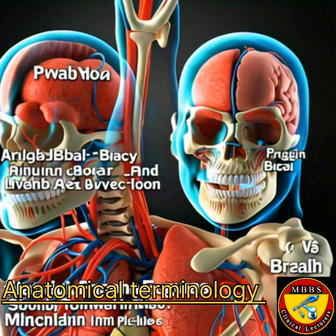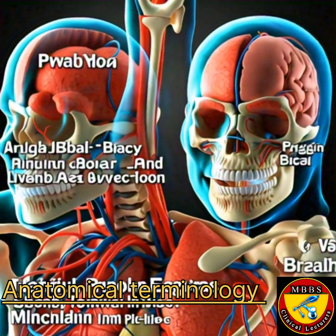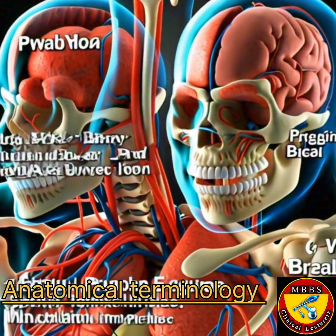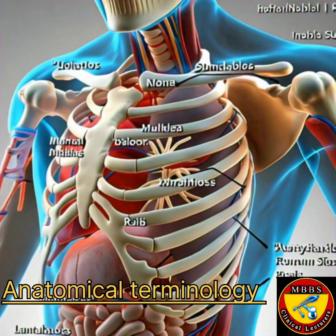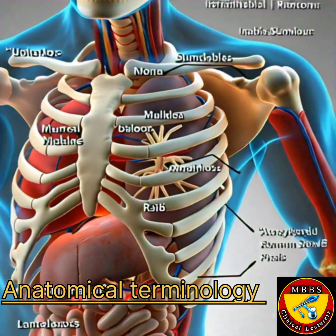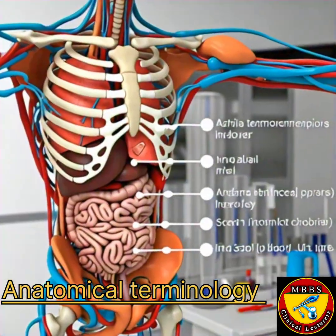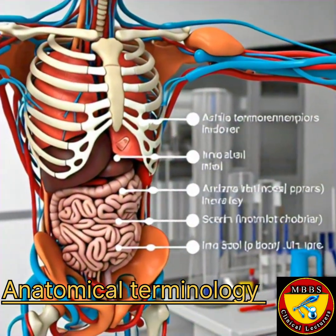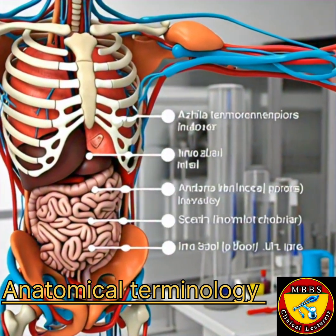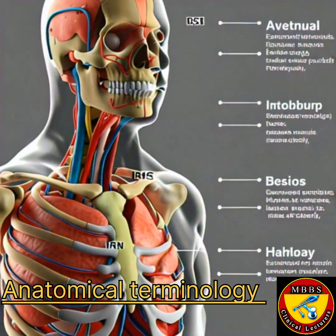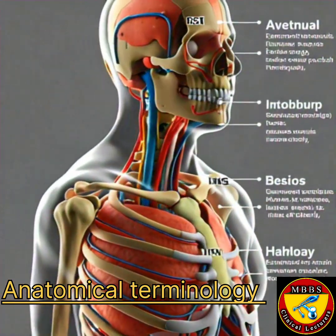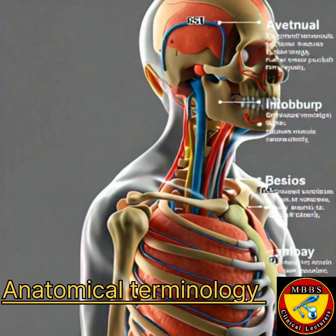2. Frontal Plane (Coronal Plane) – An imaginary plane that divides the body into front and back halves, running from the top to the bottom. 3. Transverse Plane (Horizontal Plane) – An imaginary plane that divides the body into top and bottom halves, running from side to side.